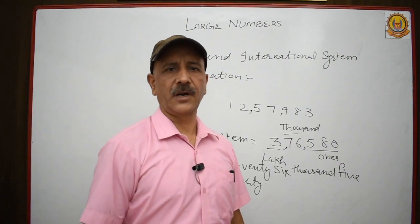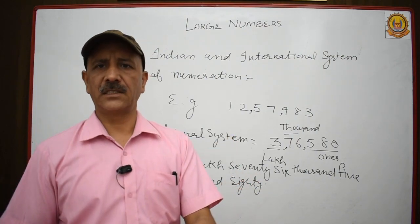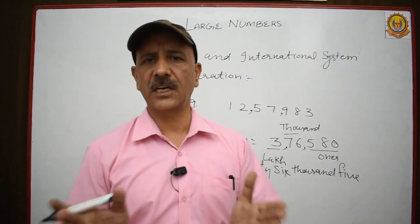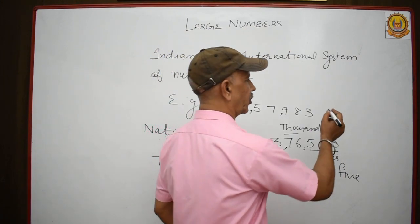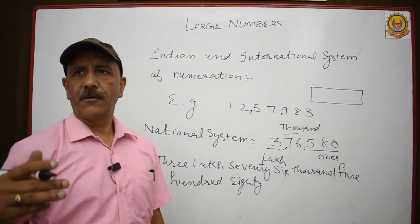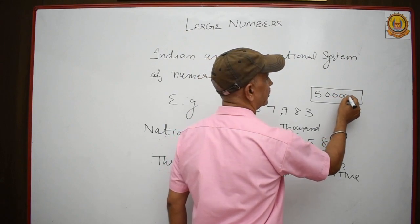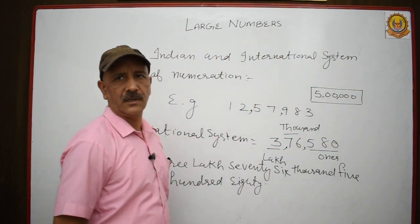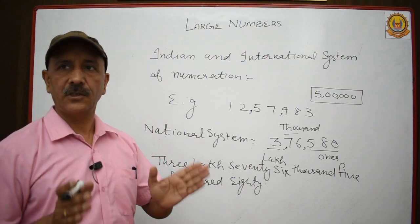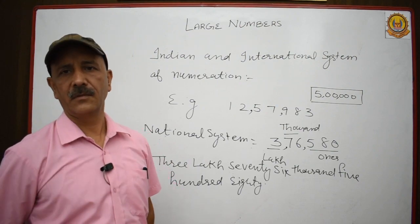If you go to your father's bank, suppose your father deposits 5 lakh rupees — you can see on the cheque they write 5,00,000 and put commas in it. They are showing this particular number in the national system, that's why they are putting the comma there.